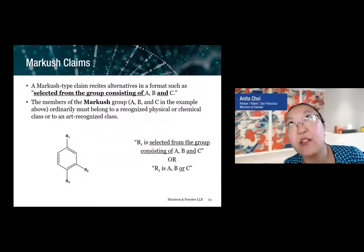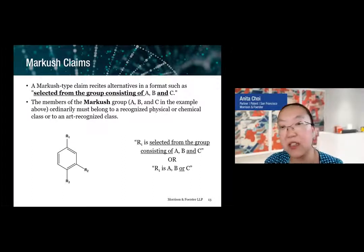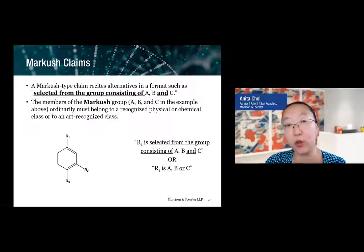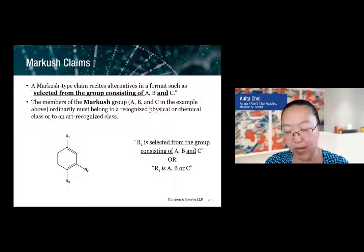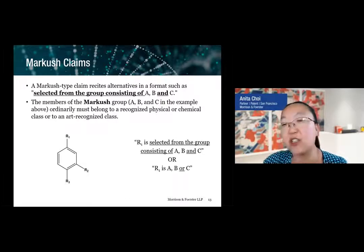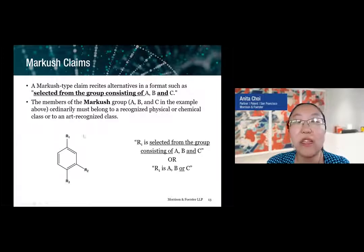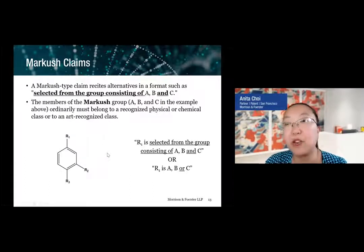Another concept important for small molecule cases is Markush-type claims. Markush-type claims are a way of expressing alternatives in a particular format. The Markush language is specifically: something is 'selected from the group consisting of A, B, and C.' That's the precise language. You can also technically rewrite that and use plain English, saying 'R is A, B, or C.' These are different drafting techniques to express alternatives. This is important in small molecule cases because we deal with a lot of alternatives through the R variables in our genera.